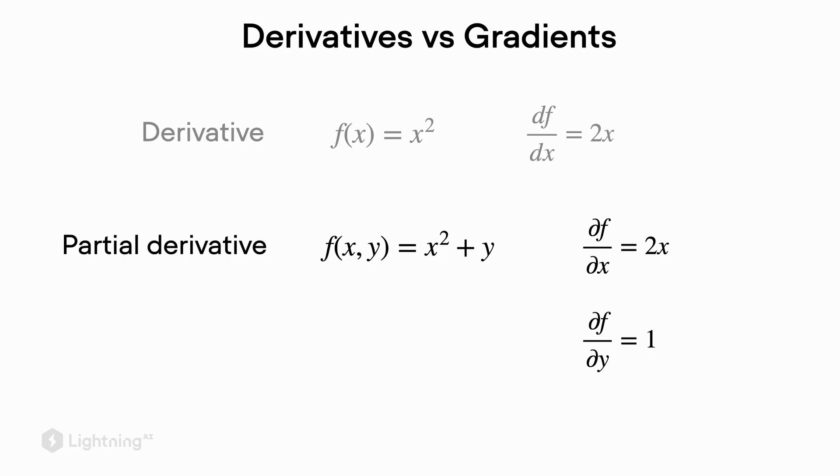Now there is also the concept of the partial derivative which is a term we also used in the previous video. The partial derivative is essentially a derivative of one of the variables if a function consists of more than one variable. So for example if we have a function x squared plus y we have two variables. Now I can compute the partial derivative of f with respect to x and in fact this is 2x similar to the derivative of the function x squared before.